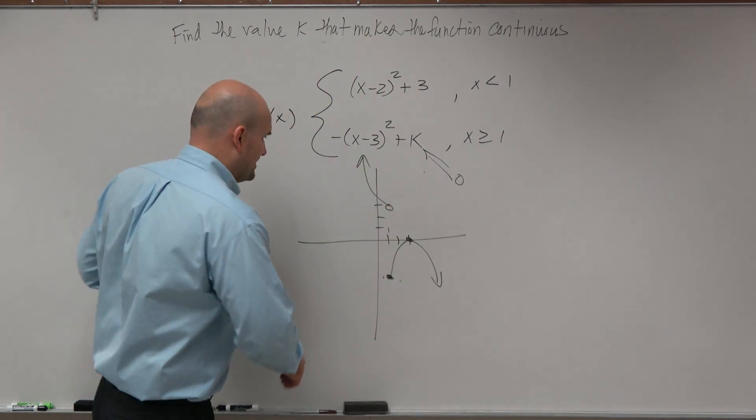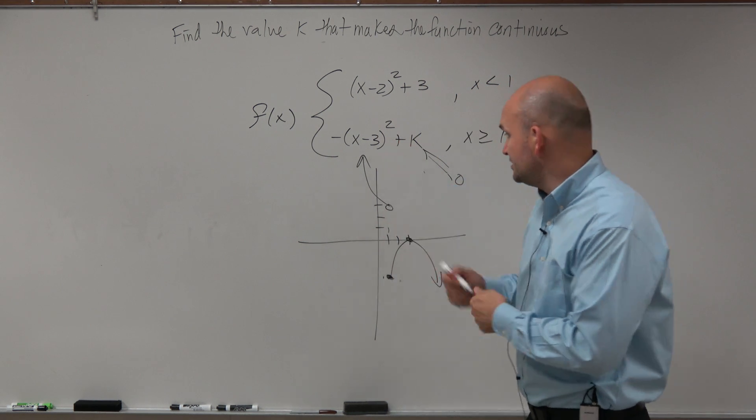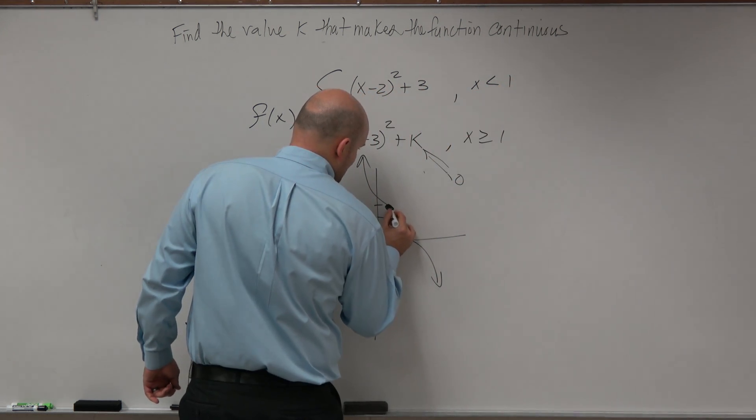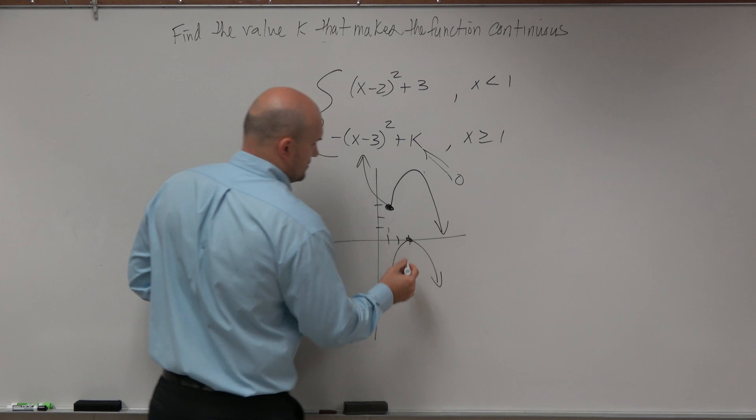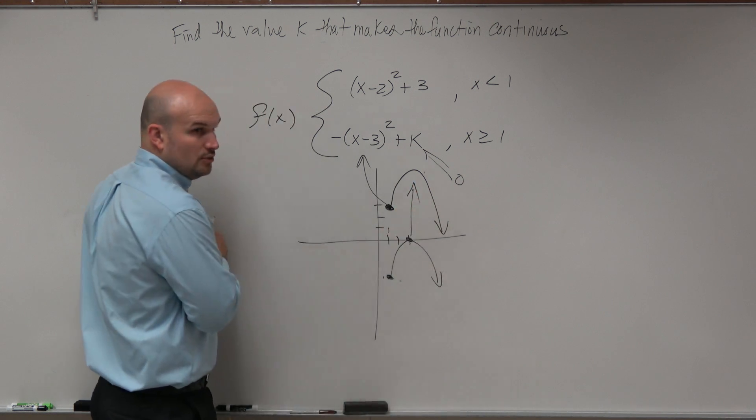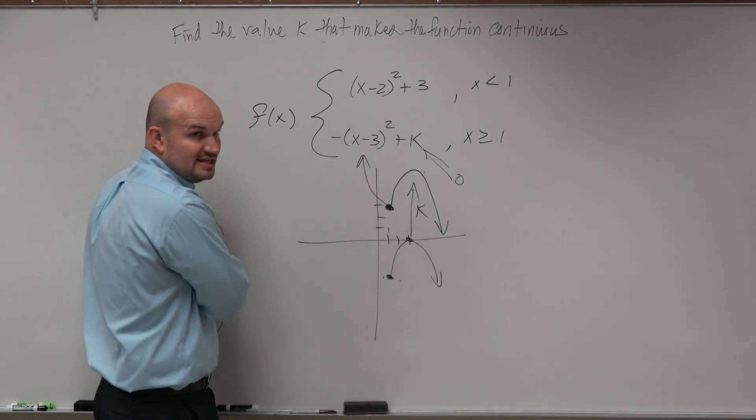So what we want to do is, in the perfect world, if these are going to be continuous, our graph is going to look something like this. Right? We've got to shift it up k, so therefore it's continuous. Correct?